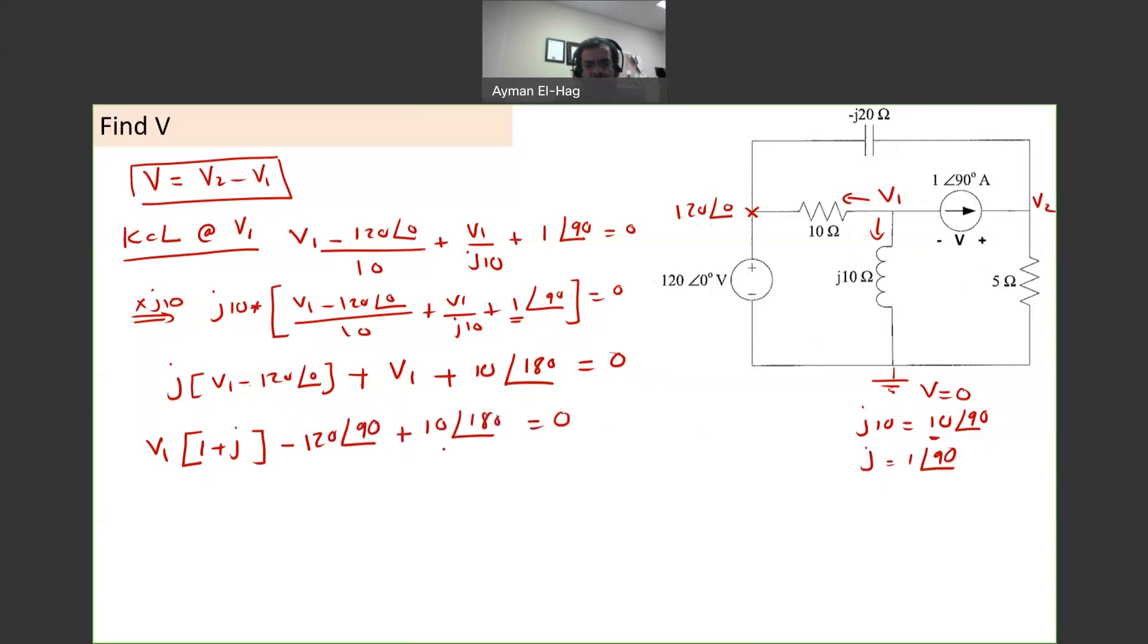So I will take V1, we will have V1 times 1 plus J is equal to 120 angle of 90, minus 10 angle of 180, which is equal to J120, and this is equal to minus 10, with a minus, this becomes plus 10. So from this, your V1 will equal to 10 plus J120, divided by 1 plus J.